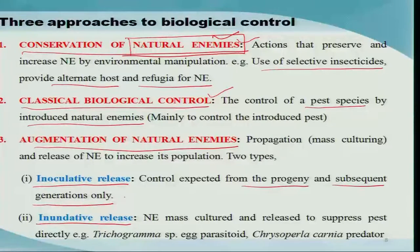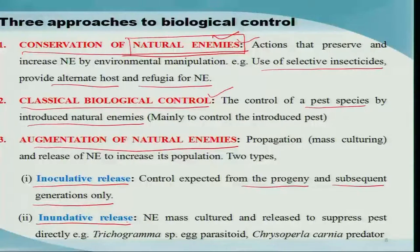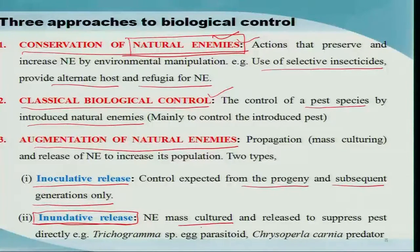Inoculative release is done in more or less permanent ecosystems such as horticultural ecosystems. In case the crop is quite short duration and we need to control the pest immediately, then we go for inundative release. In inundative release, we mass multiply the natural enemies under artificial conditions and then release into the field, which actually suppresses the pest quite quickly.